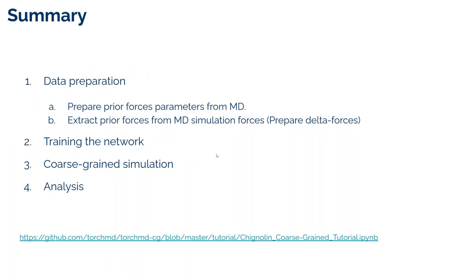As a summary of the whole process: first, we prepare our data by preparing prior force field parameters and extracting delta forces from MD forces. Then we train our network using carbon-alpha atomic coordinates and corresponding delta forces. Once the network is trained, we perform simulations using TorchMD with the coarse-grained potential as an external force. Finally, we analyze our simulations to see how well they perform.